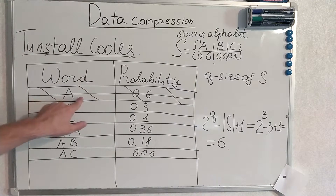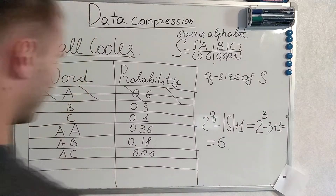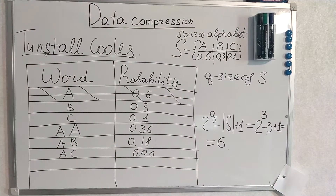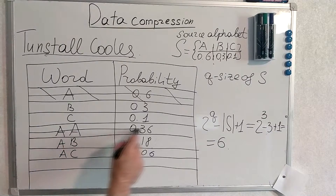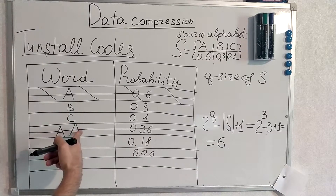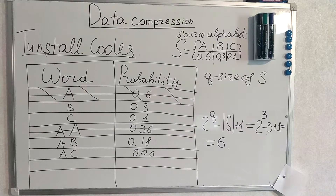We have crossed out A because it has the biggest probability, and we do the next step. We multiply everything by the symbol with the biggest probability. It is getting a little messy. We cross this entry out and multiply every other entry by it. After doing this, I have already calculated that the table will exceed 6 — there will be 7 members — and then we stop the algorithm.